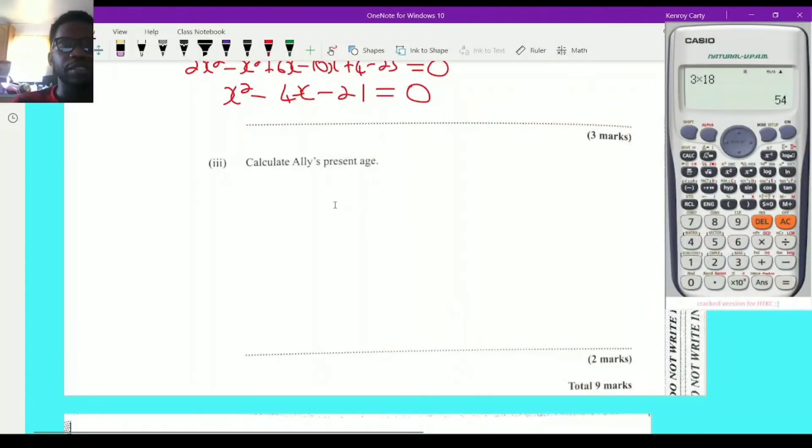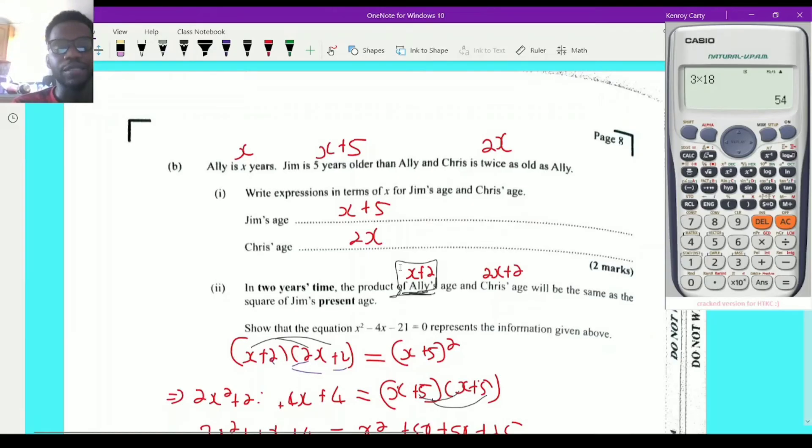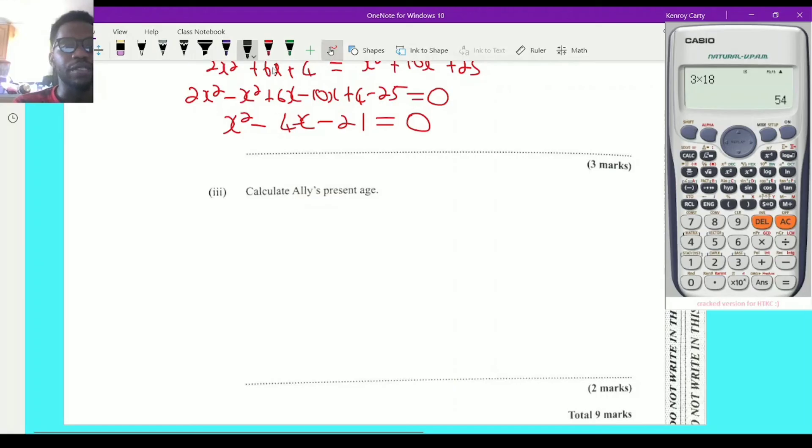Now the next question says I should calculate Ali's present age. Now let's go back up, see if we can find Ali's present age. Present age of Ali is actually x, not x plus 2. x plus 2 would be the age after 2 years which has not yet come. We'll deal with the present which was Ali. Now we said Ali is x years old. So at the moment Ali is x, so it means that if I can find x I can find Ali's age. Now notice that what we have here is that we have a quadratic equation. So by solving this quadratic equation I'm going to find x, hence finding Ali's age.